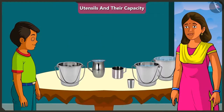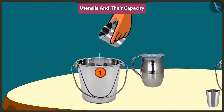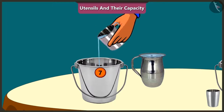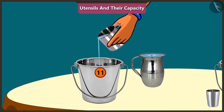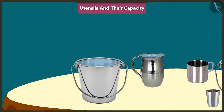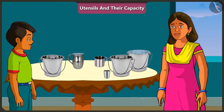Come on, let's fill the bucket using a mug. Counting 1 through 15 — 15 mugs of water filled up the whole bucket completely. The capacity of this bucket is equal to 15 mugs of water.